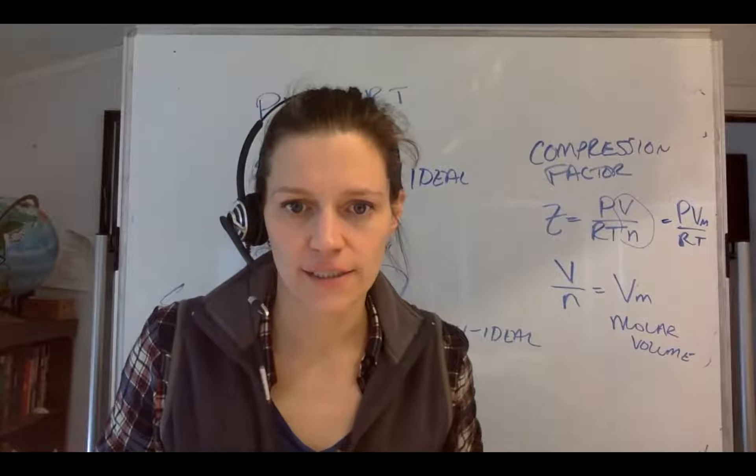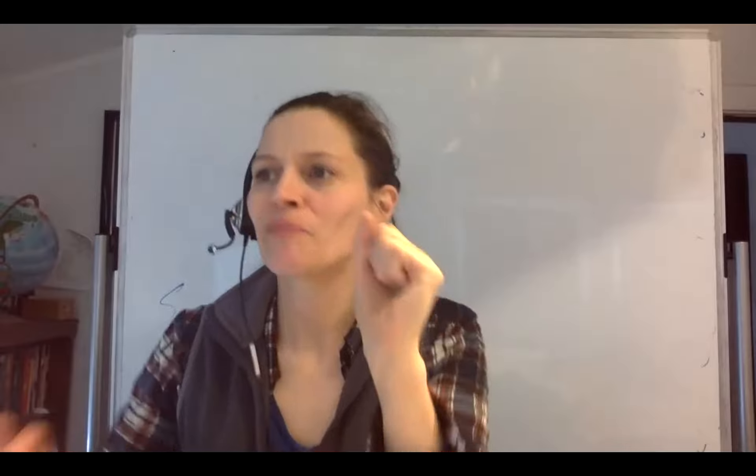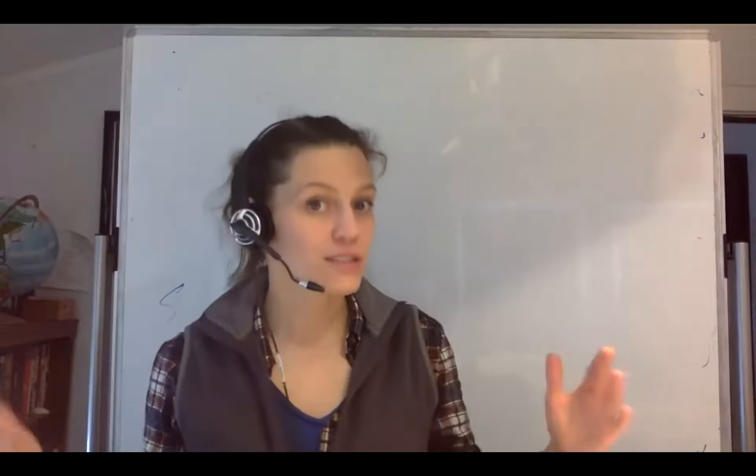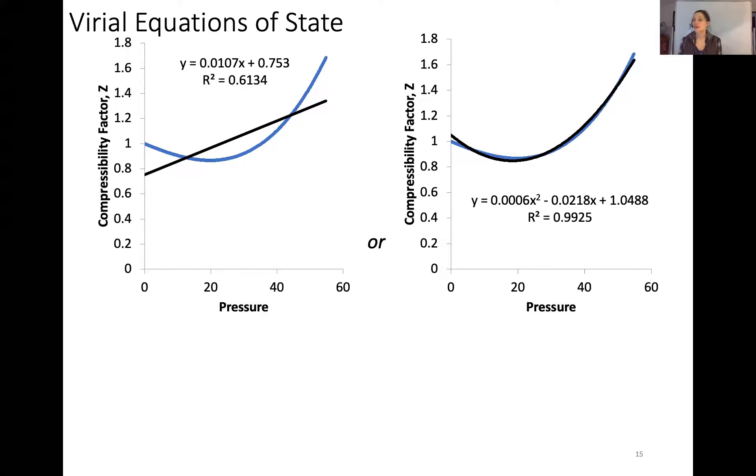So now let's assume that our gas does not behave ideally whatsoever and we've got one of those wonky kind of curvature ones. How can we model the data if we go to that extreme of a pressure? I'm going to screen share again.